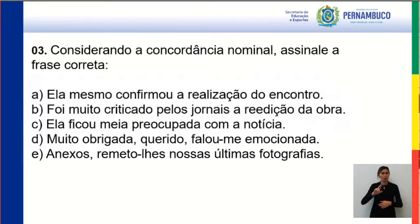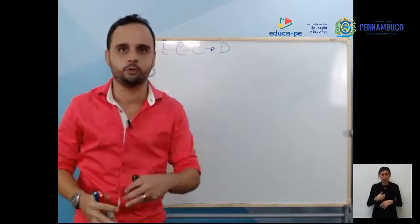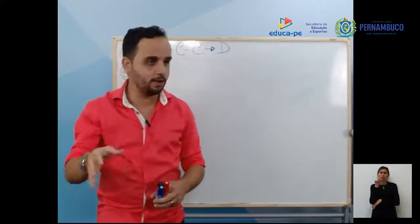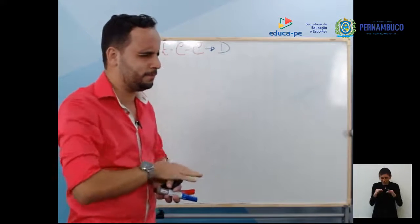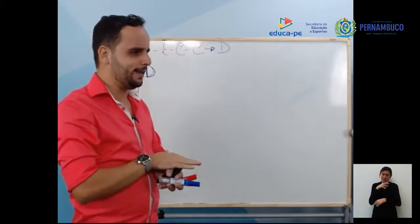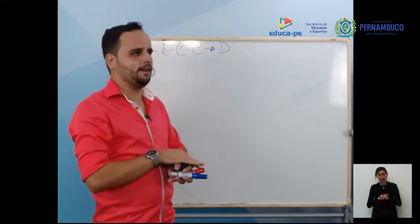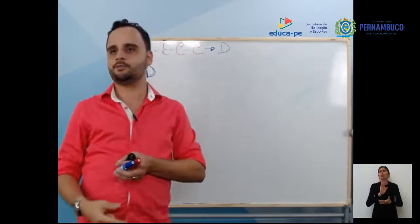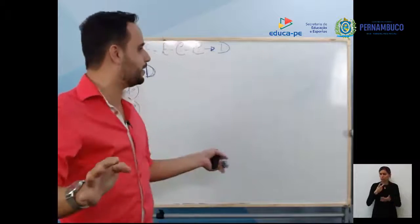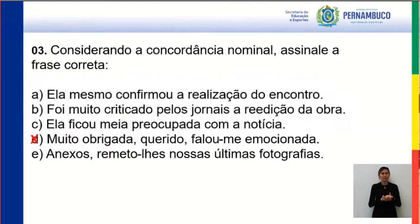Lembrando que não é pra chutar. Mas se for pra chutar, chuta a letra C. Quando vocês vão chutar a prova, qual alternativa chutam? Eu nunca chuto a letra A — tenho medo, acho que a A nunca é. Eu também fui aluno, também chutava. C de coragem, de Cristo, de certo; D de Deus; E de esperança. A resposta certa é a letra D.